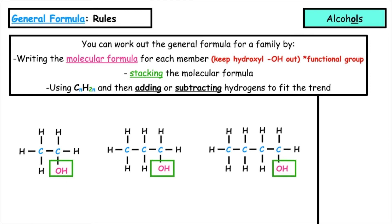We want to write out the molecular formula using the carbons, the hydrogens, and putting the hydroxyl group out. So we have C2H5OH, C3H7OH, C4H9OH.